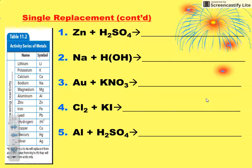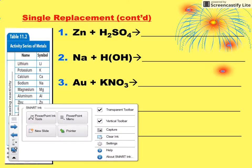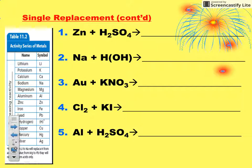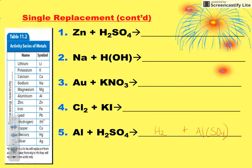On our last video, I was trying to finish up balancing this fifth single replacement reaction. We had kicked out our hydrogen, and aluminum had paired up with sulfate. So we wrote our formula and crisscrossed our charges, putting a 2 here and a 3 here. I'm going to go back because this is one that we have to reduce.